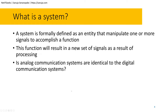Analog communication systems are similar to digital communication systems in that we have two major divisions. In simplest terms, they are similar in how systems operate — we take a signal, process it, and generate another signal. However, they are fundamentally different at the most basic level of how those systems operate.